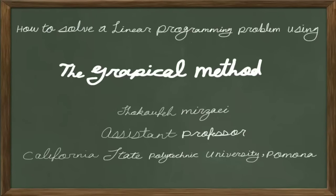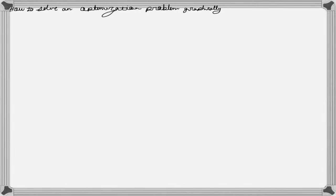Hello everyone, this is Mirzaev from Cal Poly Pomona and in this lesson we are going to learn how to solve a linear programming problem using the graphical method. We usually use the graphical method for problems with two decision variables. The reason we do not use the graphical method for problems with more than two decision variables is the complexity of their visual representation. For problems with more than two decision variables, we later introduce the simplex method.